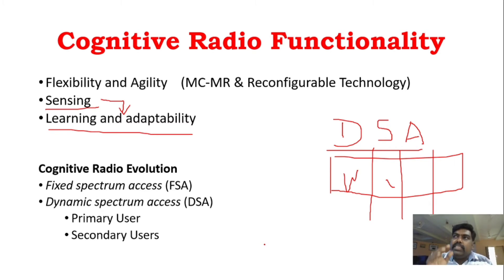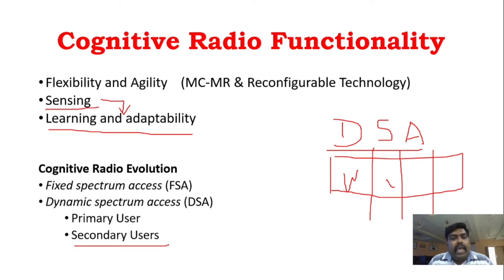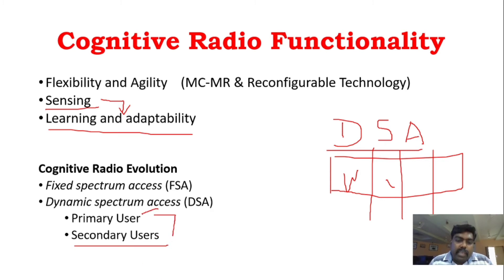In dynamic spectrum access, the unlicensed secondary user is not simply allowed to access freely, but there are certain conditions. If a licensed primary user is assigned a spectrum and that particular spectrum is unused, it will be free. If you assign a secondary user, they can access it. This technique is called Dynamic Spectrum Access.